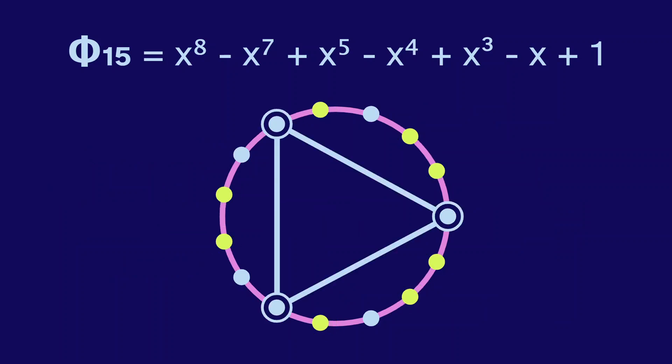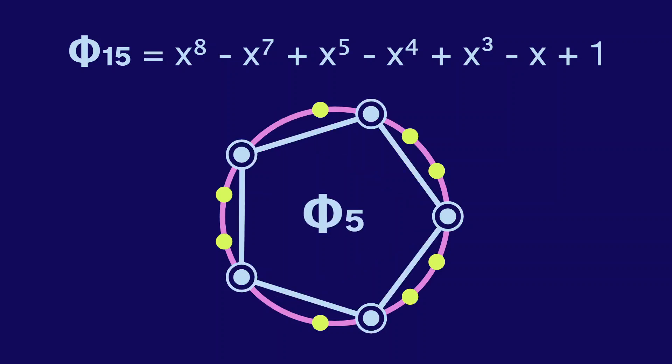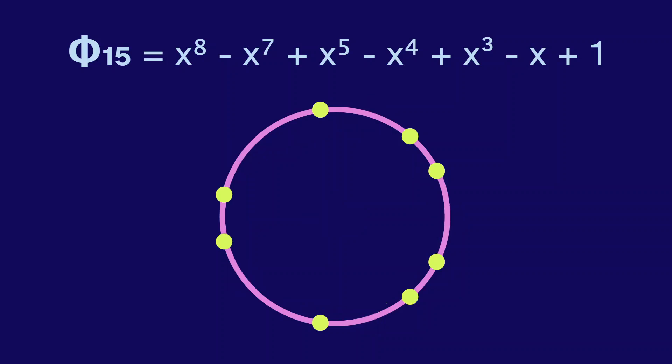These 3 are themselves evenly spaced. So we would have already seen them in the 3rd cyclotomic. And we would have seen these 5 in the 5th cyclotomic. So that leaves us with just 8 points that appear for the first time at 15. So they are the roots of the 15th cyclotomic.